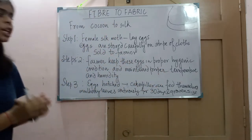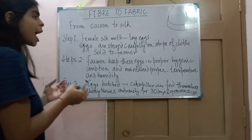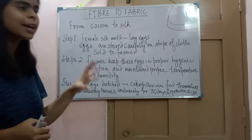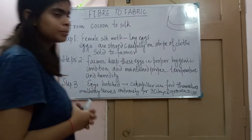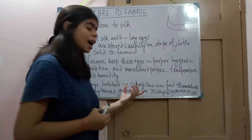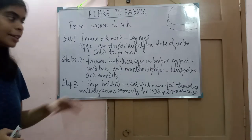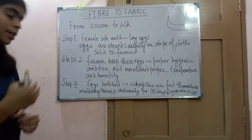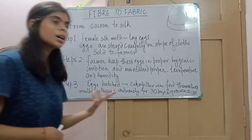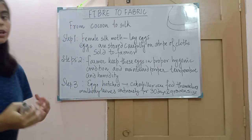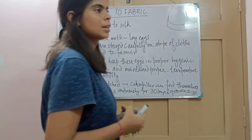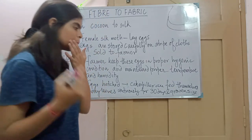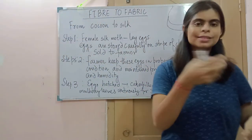The third step: after keeping the eggs in proper temperature and humidity, the eggs finally hatch. When the eggs hatch, the larva comes out — which we call the caterpillar. These caterpillars are fed on mulberry leaves continuously for 25 to 30 days.